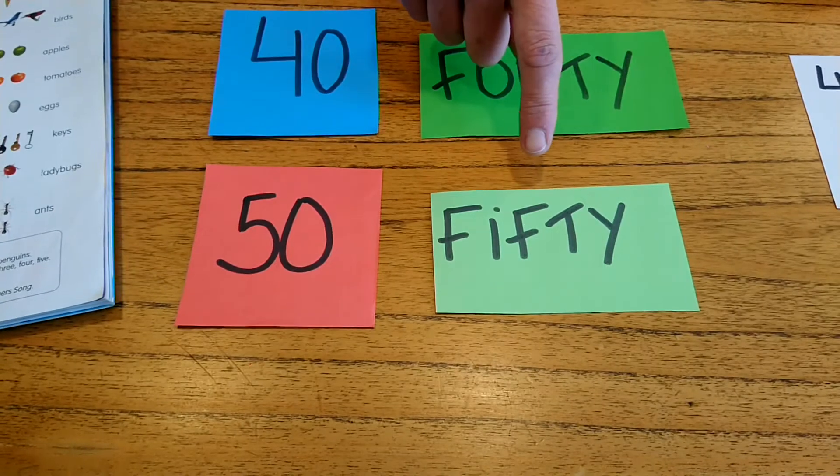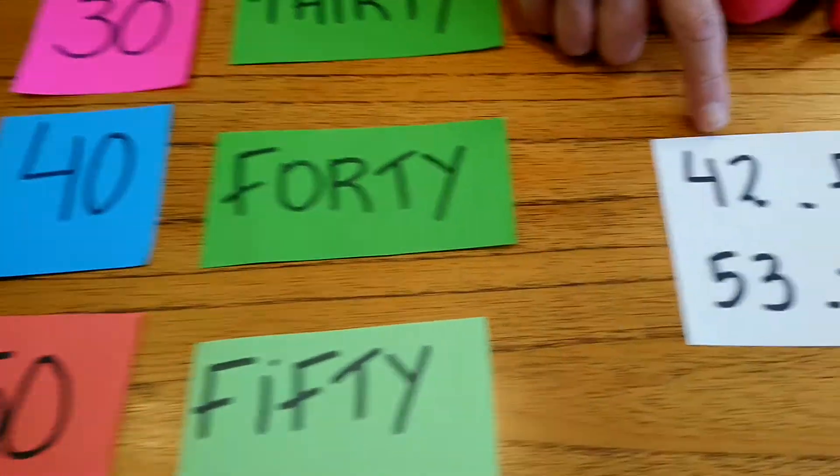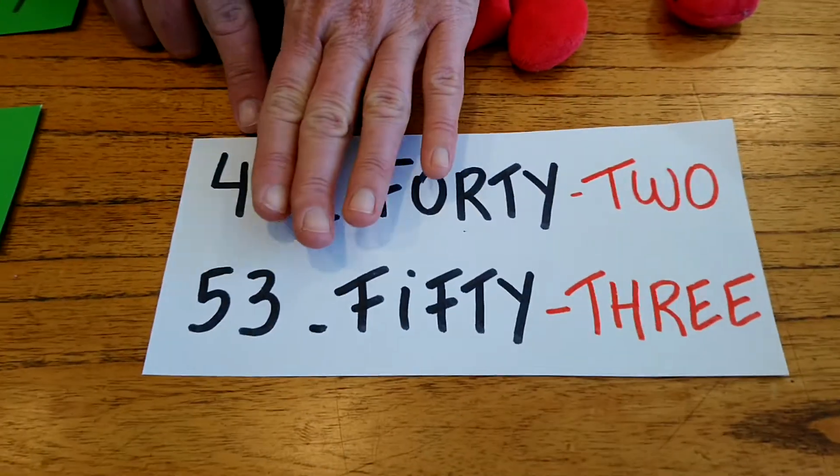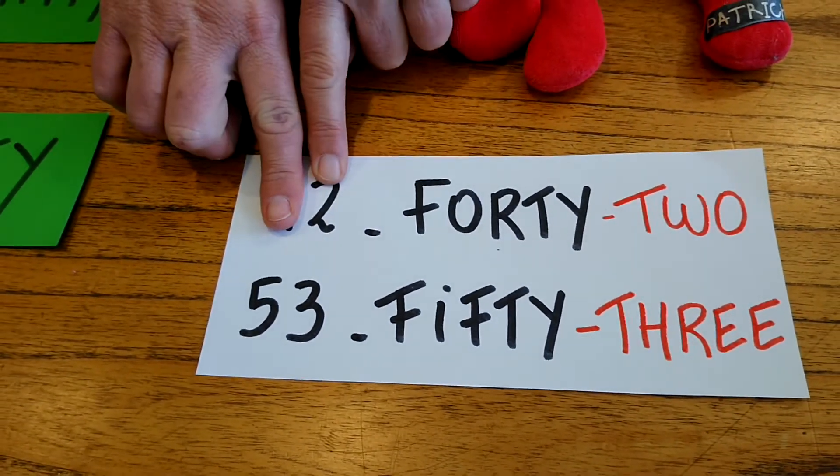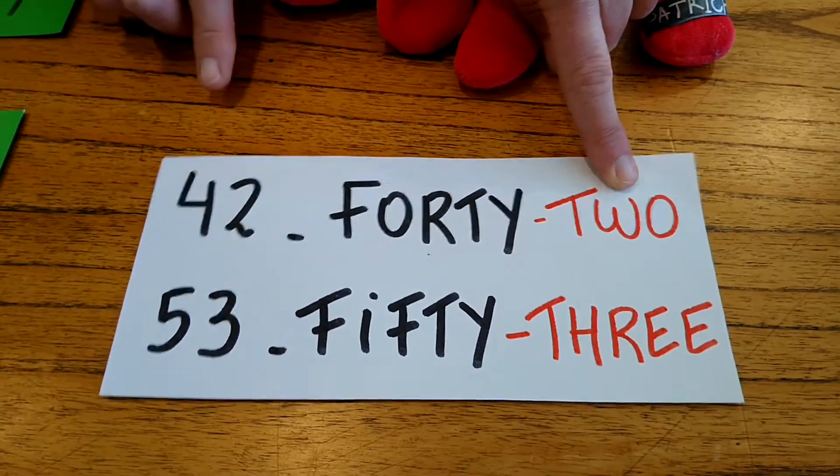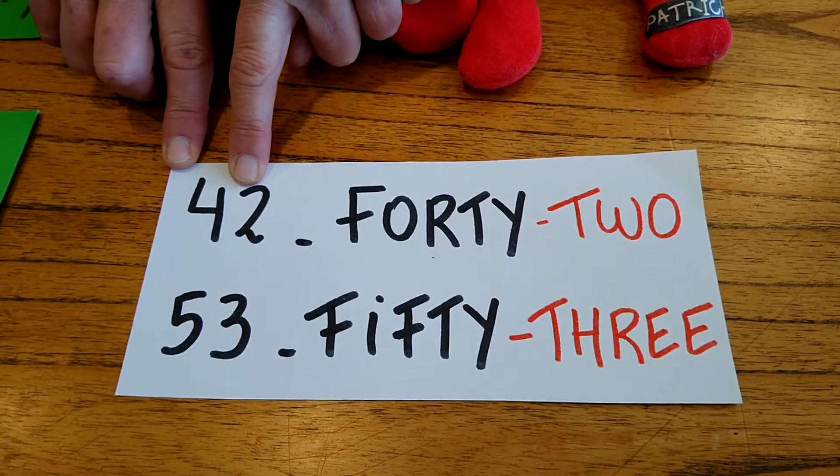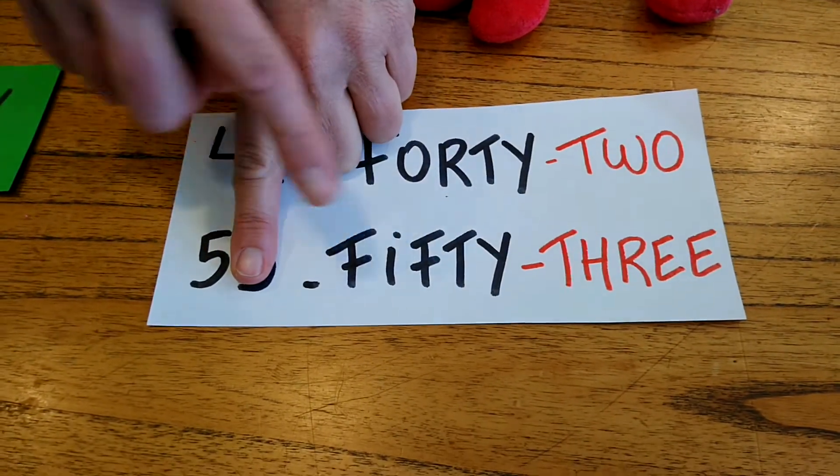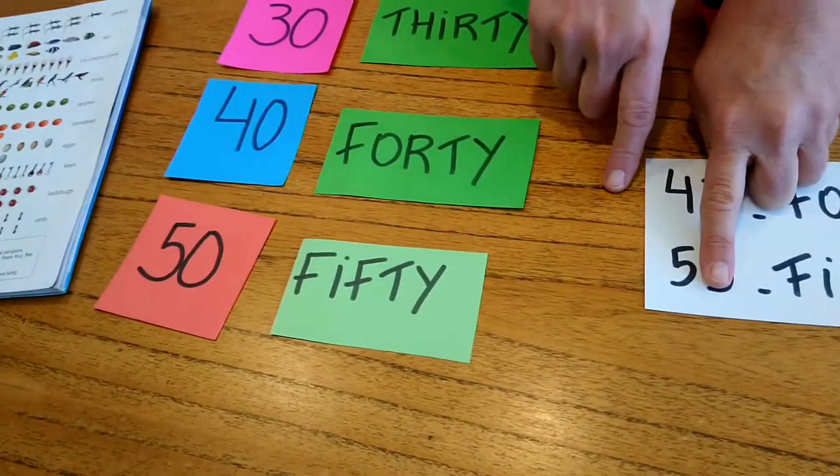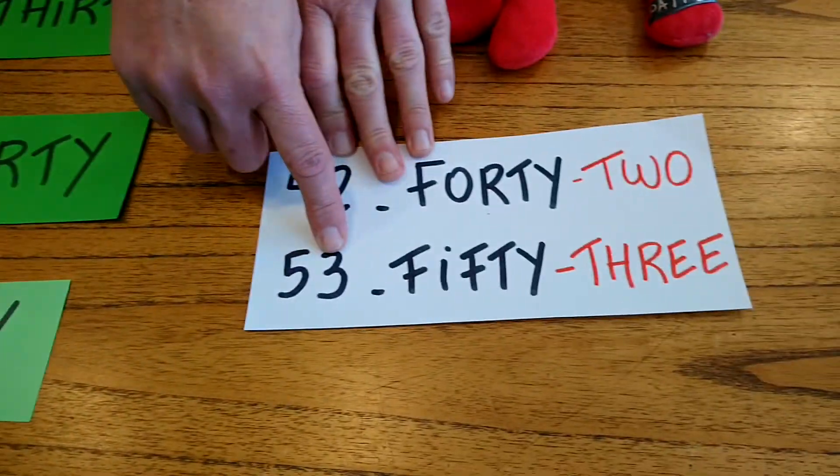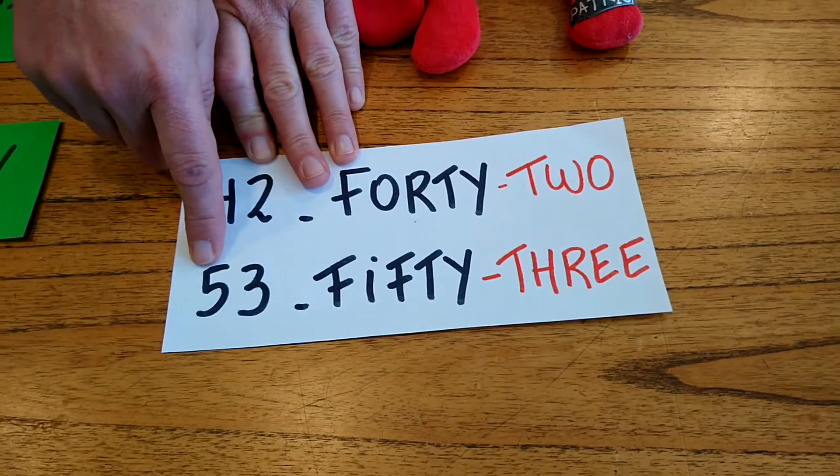So suppose you want to say this number. You have to say forty, and then this one: forty-two. In this case, fifty, because you have fifty here: fifty-three. So you combine this with the other number.